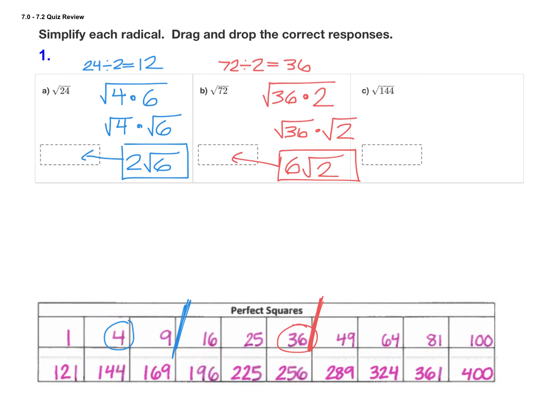For our last radical we have root 144. Always check first if you might have a perfect square. Here you can see that 144 is right on our perfect square list. So the square root of 144 is just 12. It's a nice whole number. We don't have to simplify the radical at all, it's just 12.